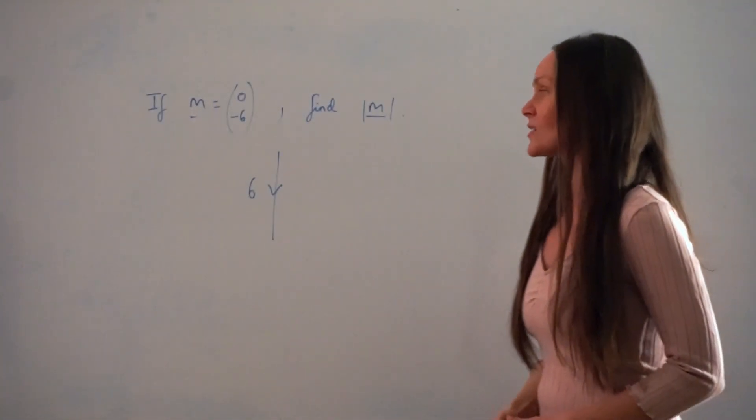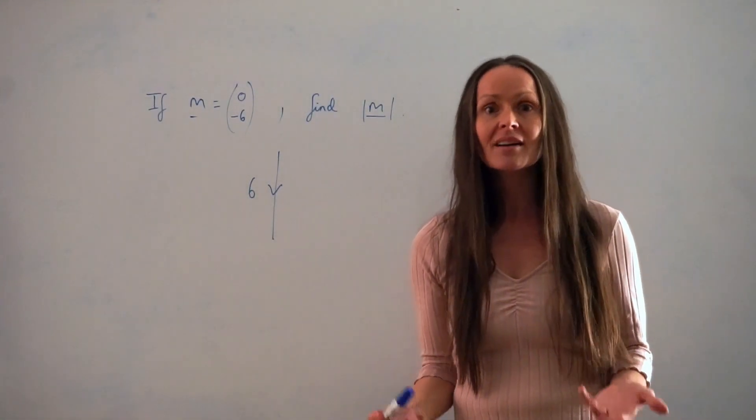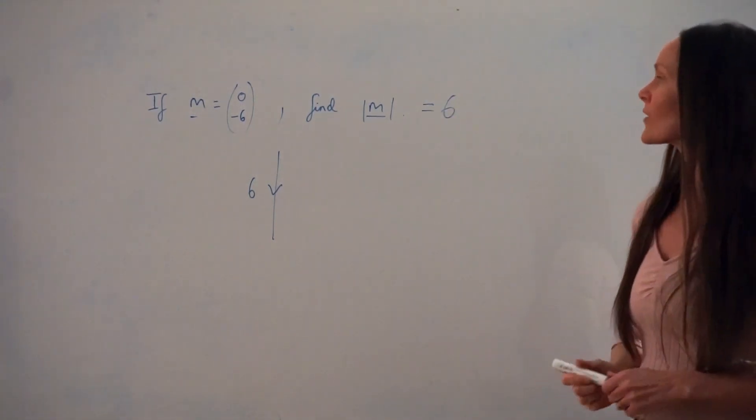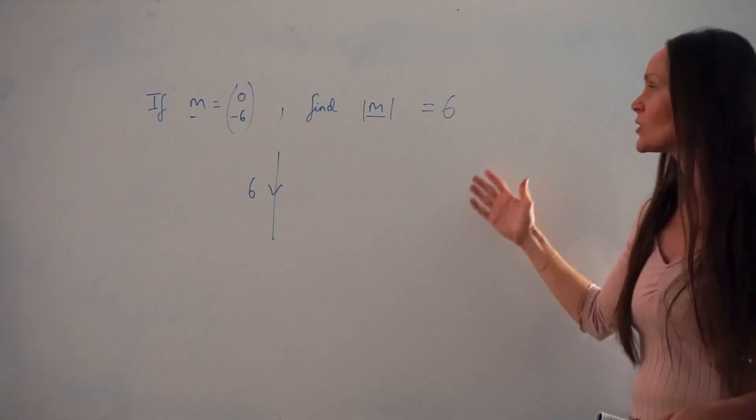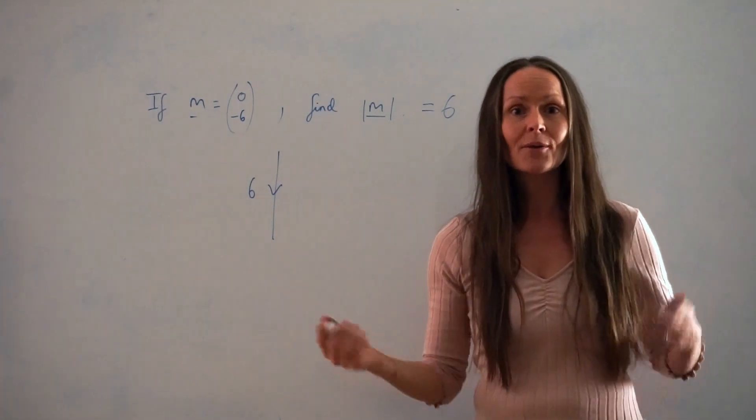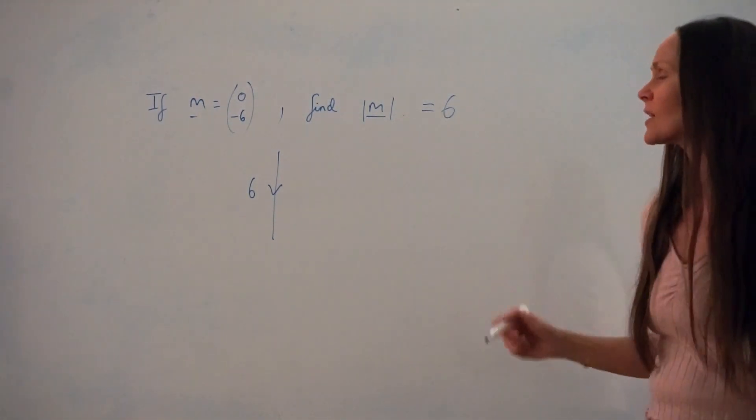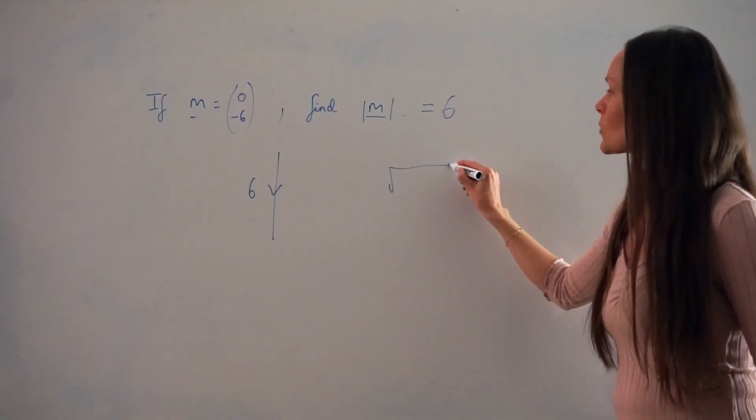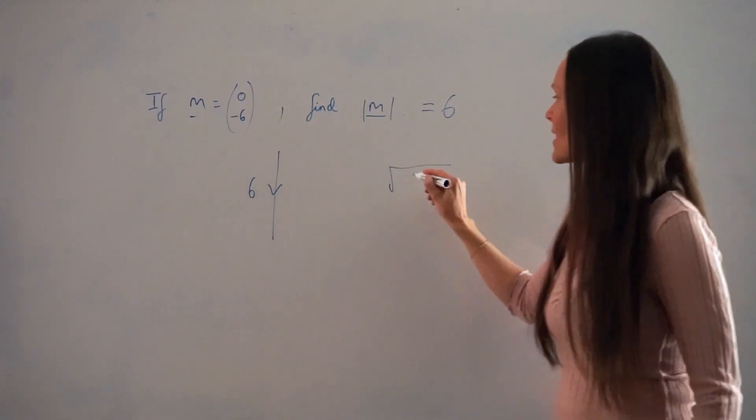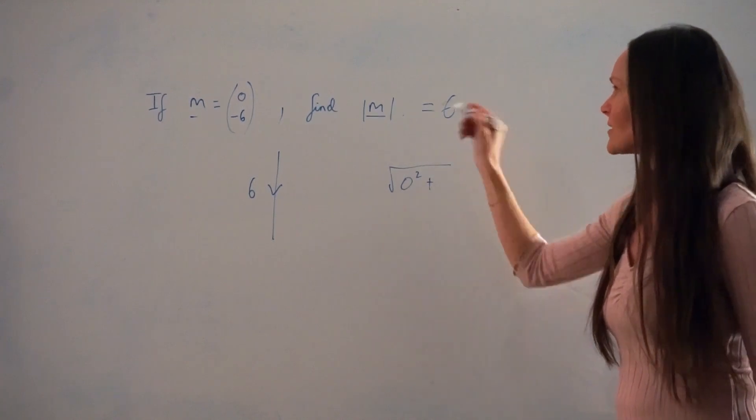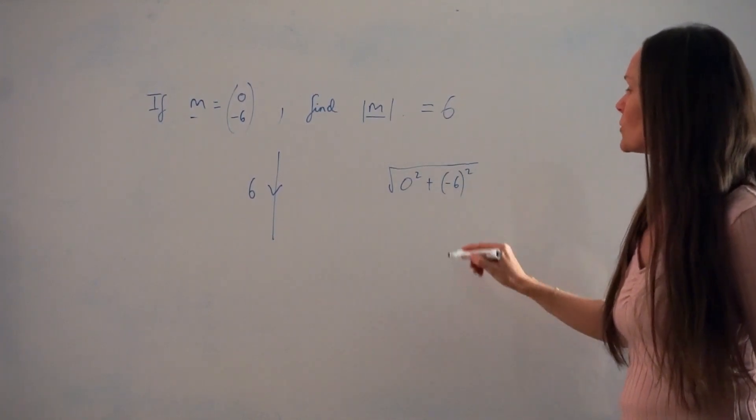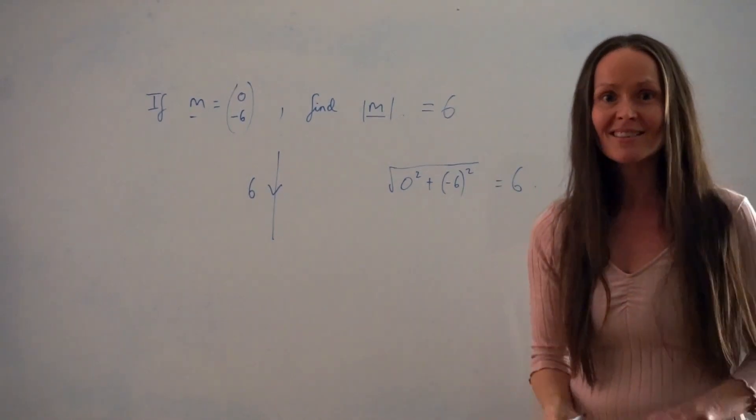So you should just be able to see in this question, the length of the vector is 6. The magnitude is 6, the modulus is 6. So that's the answer to this question. So you don't even need to do the calculation that I showed you in the last example. You can just see what the answer is. But if you did do the calculation, it would have been the square root of 0 squared plus negative 6 squared. And you don't have to put the negative, you could just put 6 squared, which also will give you 6.